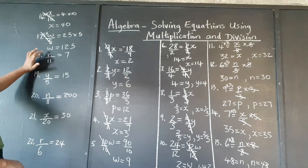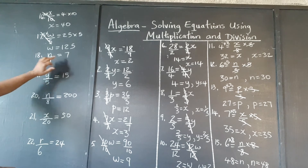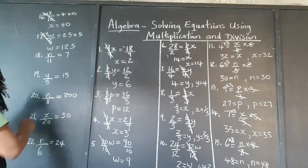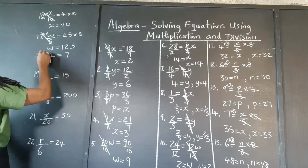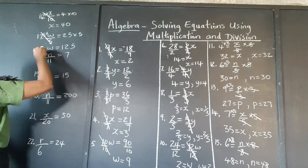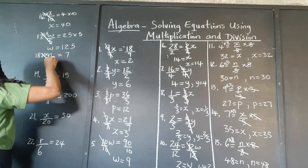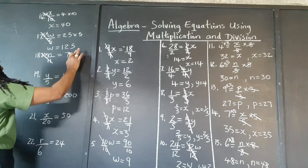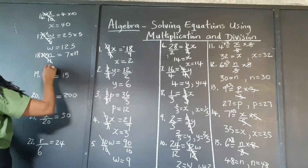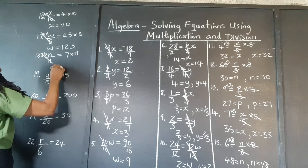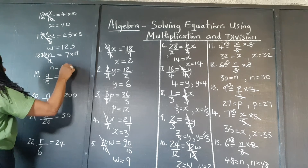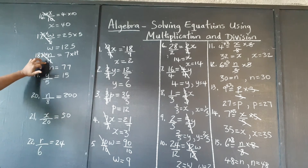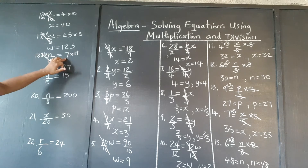Which number, when we divide it by 11, gives 7? We need to get rid of the 11. We're going to multiply by 11, so the 11s cancel out. Multiply the right by 11 as well. So n is 7 times 11, which is 77. Check: 77 divided by 11 is 7.